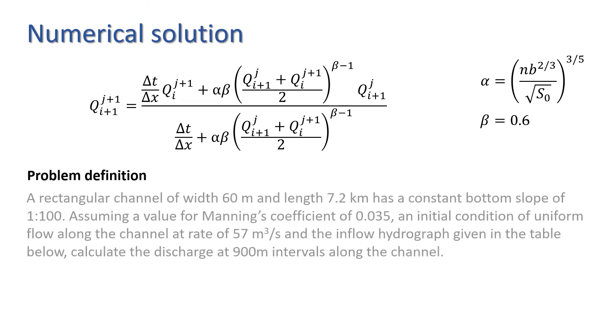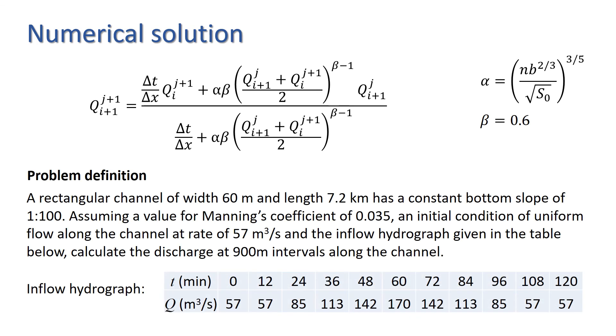So, here's the problem statement. We have b equals 60 metres, the channel length equals 7200 metres, S₀ equals 0.01, n equals 0.035, and the initial Q equals 57 metres cubed per second. Now, we want to know the discharge at 900 metre intervals, so we take Δx to be 900 metres, and I'm going to use a time step of three minutes. Note that the inflow hydrograph is given in intervals of 12 minutes, so we'll have to interpolate between values in the intervals in between, to get values for the upstream discharge.